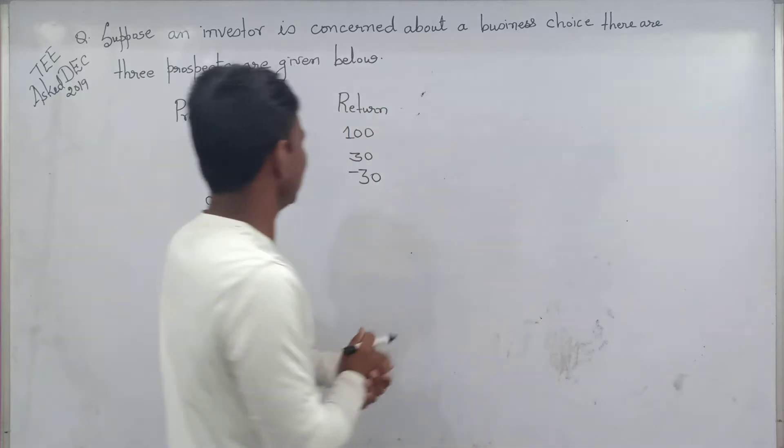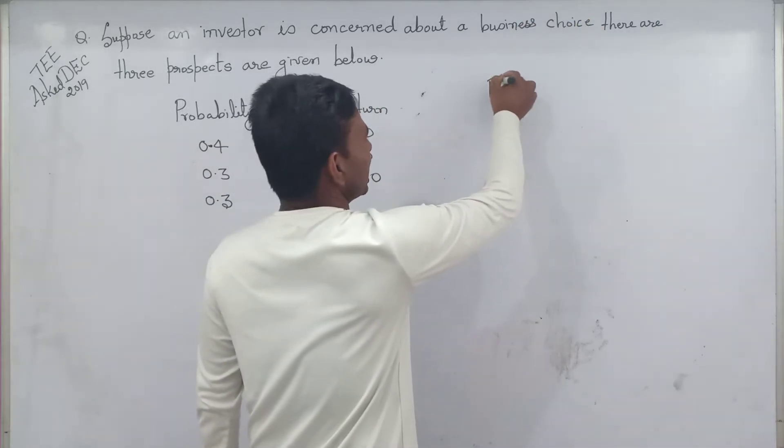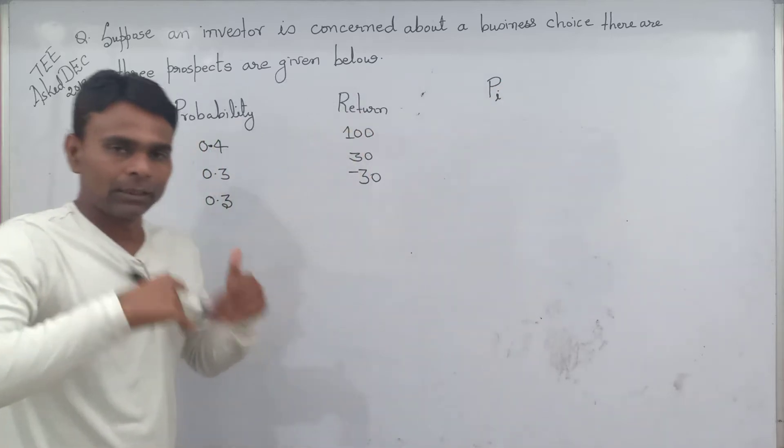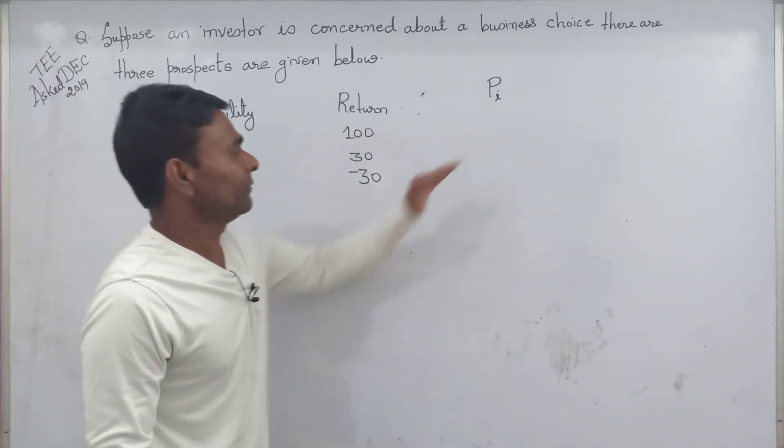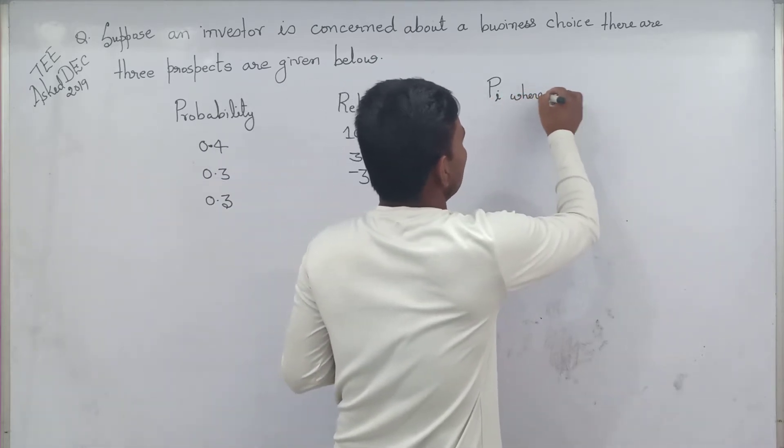Mathematically, we will have a formula. Let the probability be denoted by pi where i equal to 1, 2, 3.